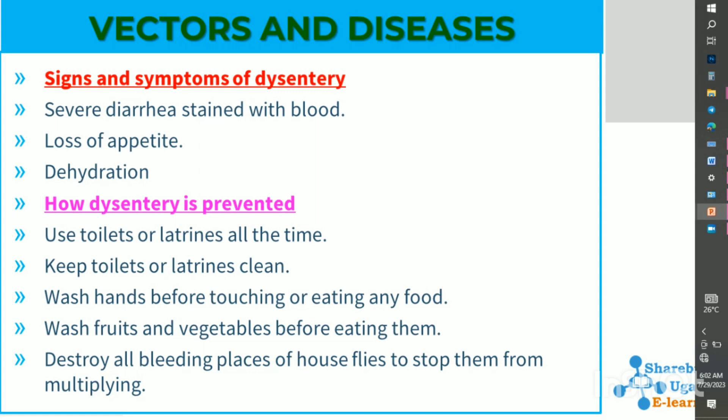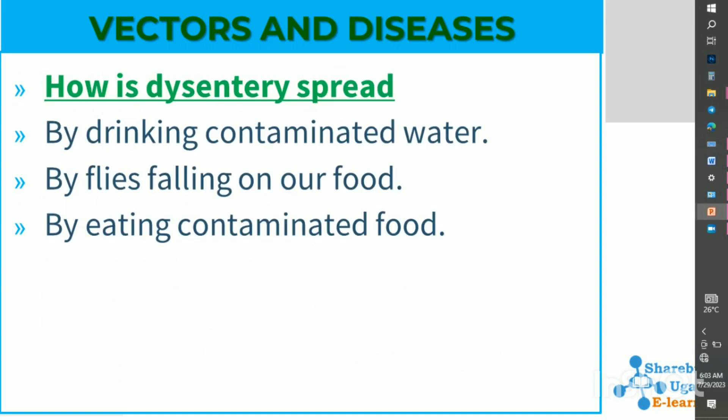Dysentery can be prevented by defecating in toilets at all times, keeping toilets and latrines clean, washing hands before touching or eating any food, washing fruits and vegetables before eating them, and destroying all breeding places of houseflies to stop them from multiplying.